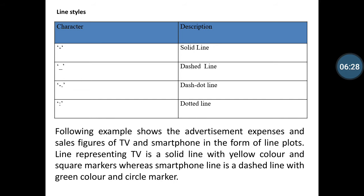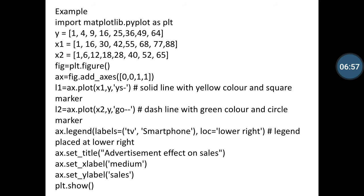In our next slide, you see the examples for advertisement expenses and sales figures of TV and smartphones in the form of line plots. Line representing TV is a solid line with yellow color and square markers, whereas smartphone line is dashed line with green color and circle markers. So first of all, you define the program.